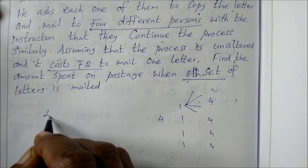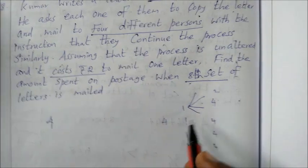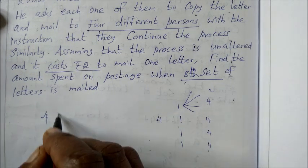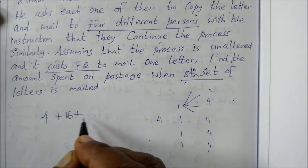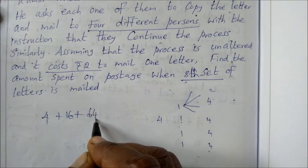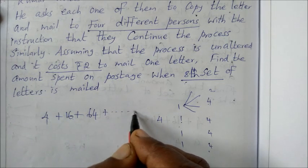So first one person sends 4 letters. Then those 4 people each send 4 letters, so 16 letters. Next, those 16 people each send 4 letters, giving 64 letters, and so on. In this way, we need to find when 8 sets of letters are posted.